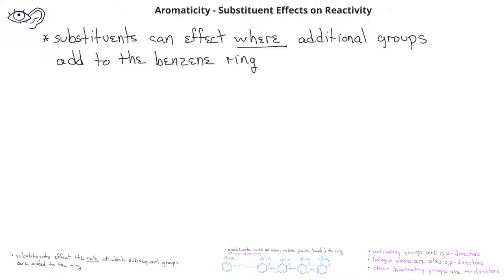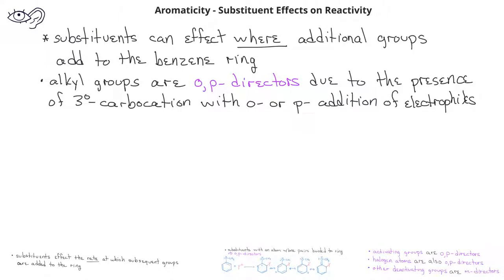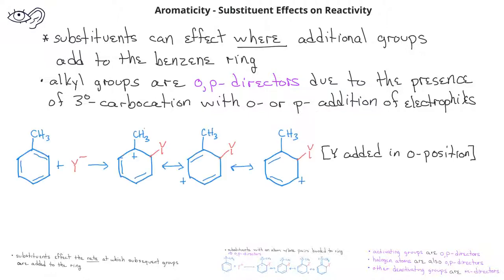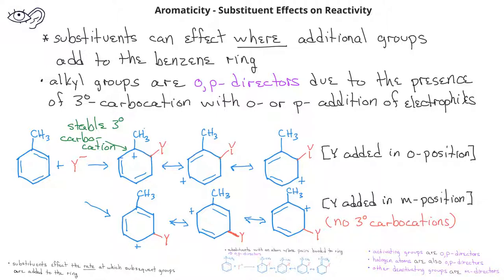Alkyl substituents are also activating groups and therefore should be ortho-para directors. However, they do not have a lone pair of electrons next to the benzene ring, so they cannot lead to ortho-para direction via resonance. Instead, when the electrophile adds in an ortho- or para-position relative to an alkyl group, we get resonance forms in which one resonance form has a tertiary carbocation. The electrophile added in the meta-position only produces secondary carbocations. Because tertiary carbocations are more stable than secondary, electrophiles added in the ortho- and para-positions will be more stable, and therefore alkyl groups are ortho-para directors.